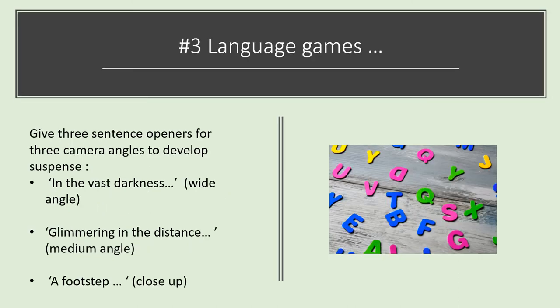Once you've spotted this strategy a few times, you'll be able to see it everywhere — in books, in films, in adverts. You'll see it being used as a way of really grabbing attention and drawing the viewer and the reader in. So why not, for our third activity, have a bit of a play with this strategy? Let's think about three sentences that we can put together using these three camera angles to develop suspense, tension and mood.